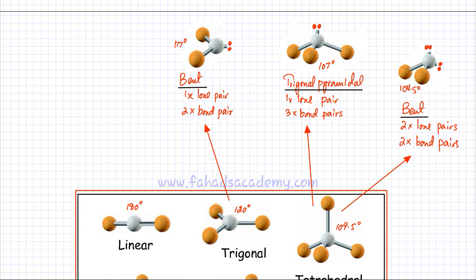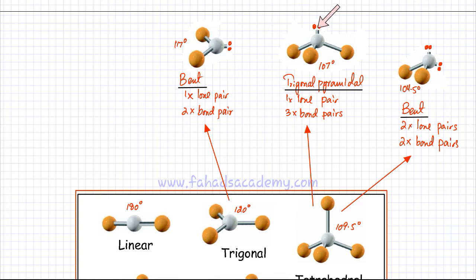The angle for trigonal pyramidal was 107 degrees and for tetrahedral it is 109.5 degrees. As you have more lone pairs, there is greater repulsion and the bonds become closer together. If you have two lone pairs, there is even greater repulsion and the bonds come even closer together.